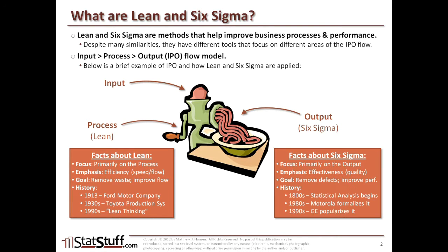Now let's shift focus onto the output, which is where Six Sigma tends to take its focus. By focusing on the output, it's more about looking at the quality, accuracy, or the effectiveness of those things coming out of the process itself. The intent is to identify and remove any defects in the outputs, thereby improving the overall performance of the process. Six Sigma began in the 1980s when Motorola formally identified it, but it wasn't until the 1990s when GE really popularized Six Sigma across many different businesses.